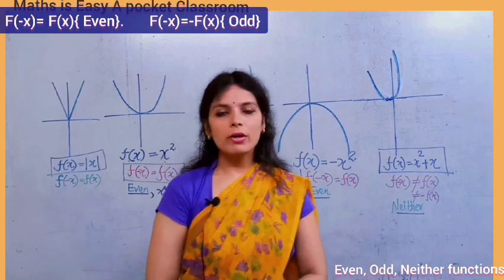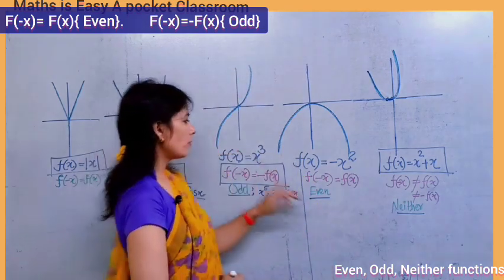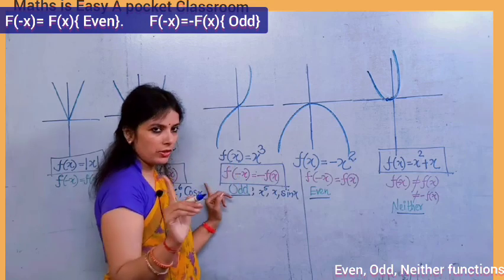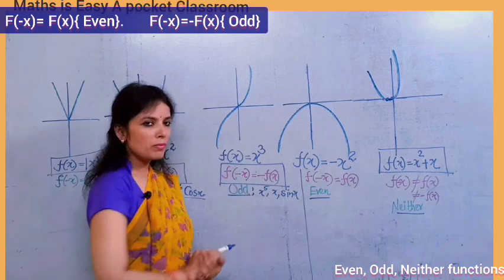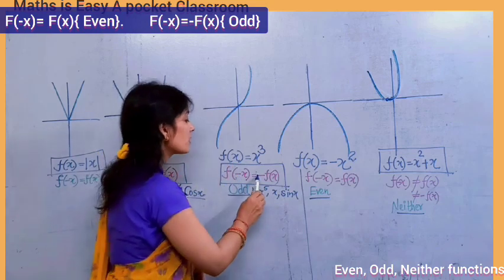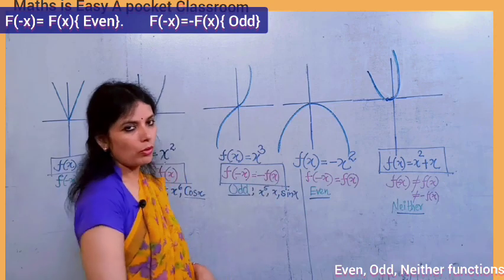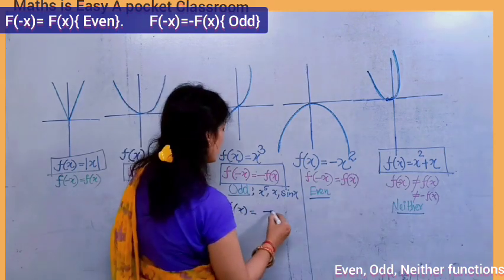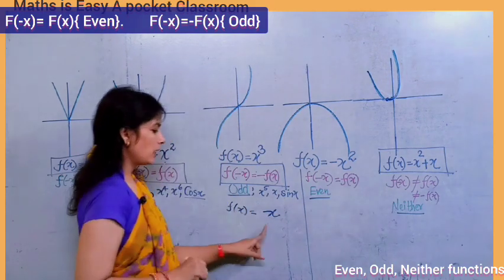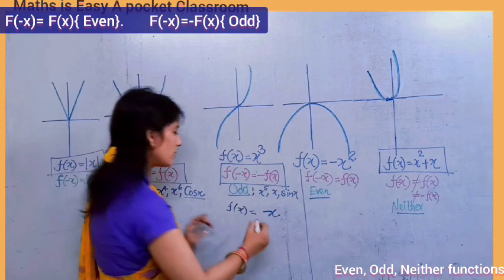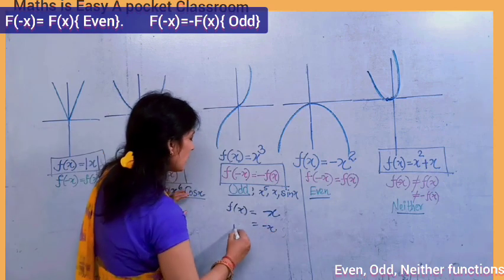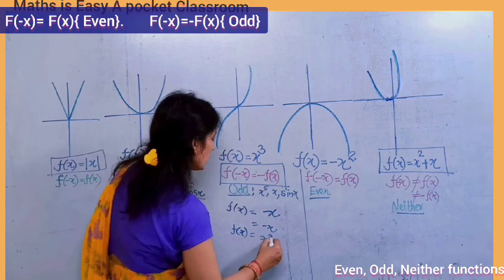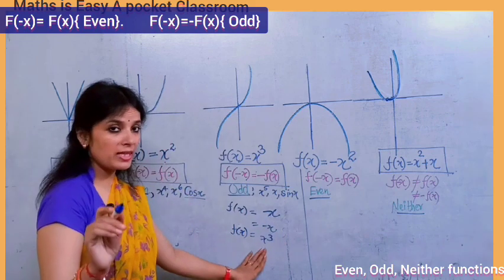Now let's come to odd functions. The definition of an odd function is: if f(x) is a function and we put x equal to minus x and the function becomes negative — that is, f(−x) = −f(x) — it is an odd function. For example, f(x) = x: if you put x equal to minus x, this function becomes negative. Similarly, x³: if you put x equal to minus x, this function becomes negative.